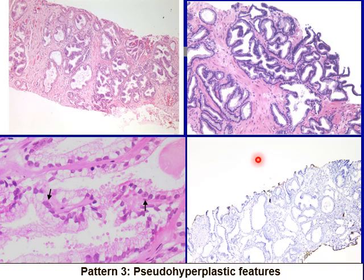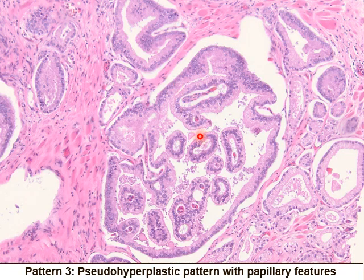Another morphologic variation that can mimic benign prostate is known as pseudo-hyperplastic adenocarcinoma. Here is a nice example — this is also graded as Gleason pattern three. Pseudo-hyperplastic prostate cancer may also show prominent papillary architecture, but these are more pseudo-papillary rather than true papillary structures. It is important not to overgrade this as Gleason pattern four.